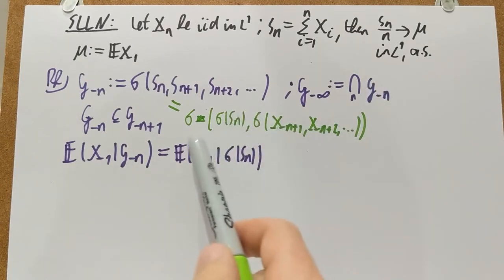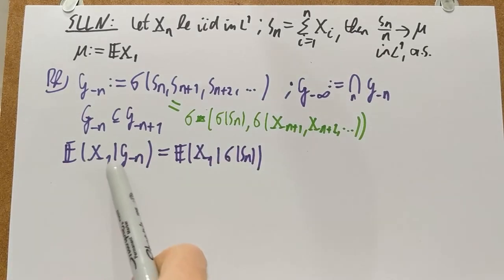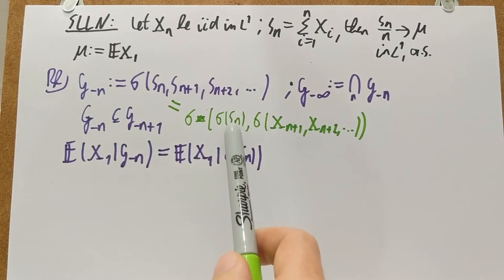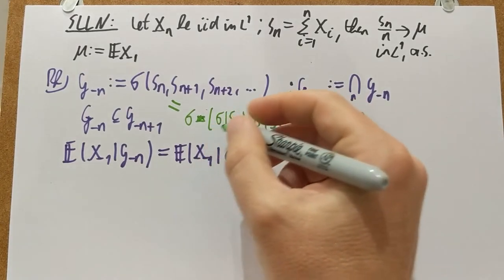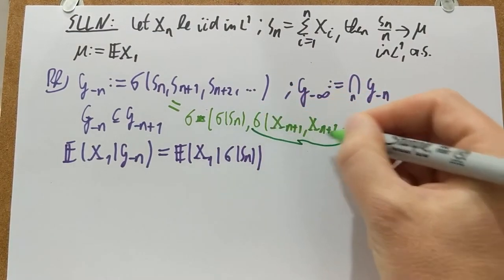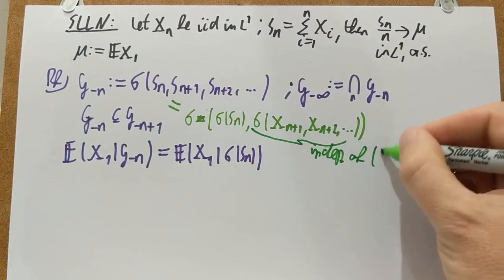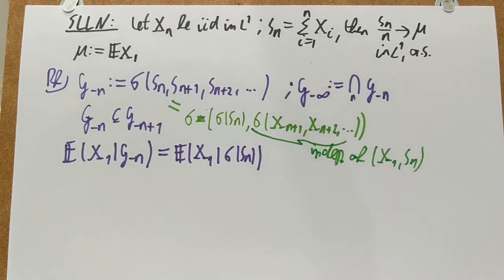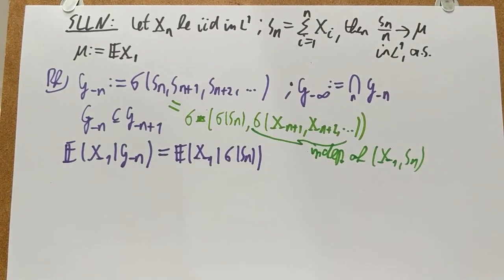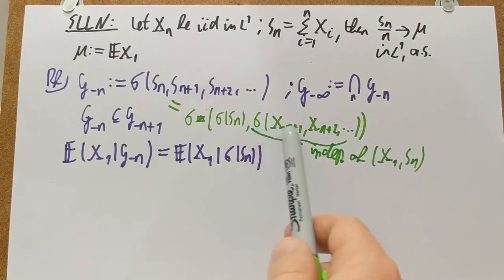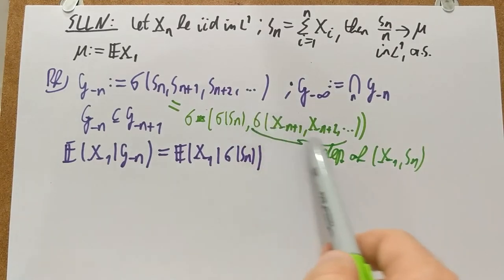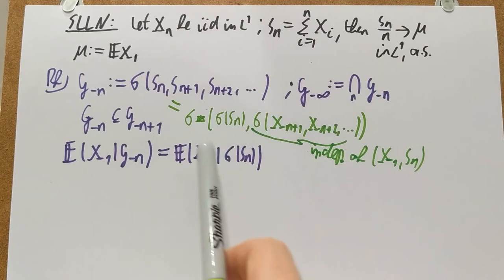If S_N is given, that's all the information I need to find out this conditional expectation of X_1 given G_{-N}. Because fixing S_N, whatever the further X's do is completely independent of both S_N and my X_1. So there is a good amount of independence here. So this part here is independent of actually the joint distribution of X_1 and S_N. Or if you want the sigma algebra generated by them. So if I want to find out the expectation given S_N, I don't need to know the further X's. It doesn't matter if I add this part of the sigma algebra in here or if I don't. It doesn't make any difference in the distribution of X_1 given S_N.